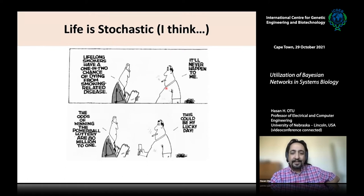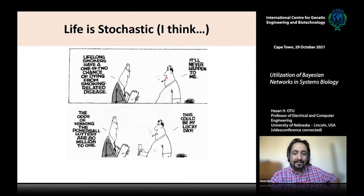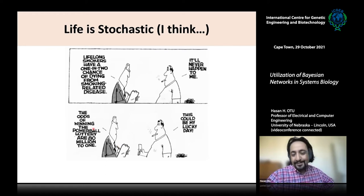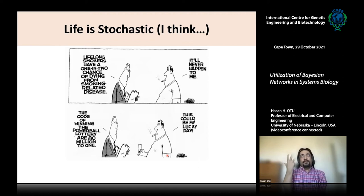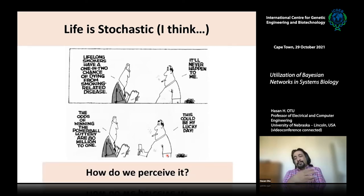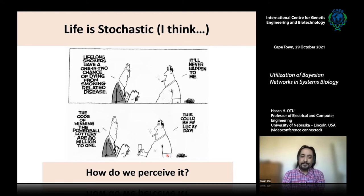A cartoon illustrates this: a doctor says lifelong smokers have a one-in-two chance of dying from smoking-related diseases, and the man says 'it'll never happen to me.' Then the doctor says the odds of winning the Powerball lottery are 80 million to one, and the man says 'this could be my lucky day' and buys a ticket. Life is stochastic, but how we perceive probability differs greatly between people.